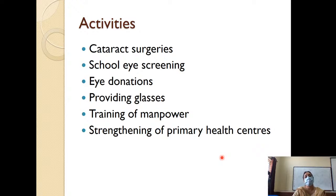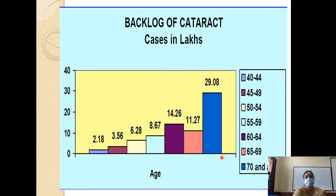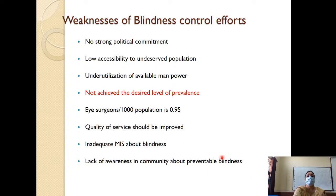Activities range across age groups: cataract surgeries as the number one priority, eye screening at schools for early identification of refractive errors, eye donations for corneal conditions, provision of glasses, increasing facilities, securing and training manpower, and strengthening primary health centers. This looks like a very giant goal, and there is a backlog of about 30 lakh cataract operations in the 70 years and above age group.